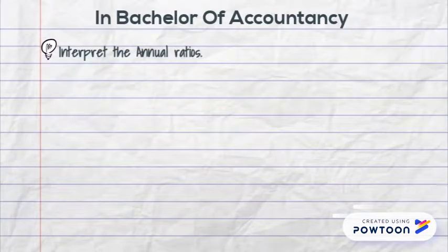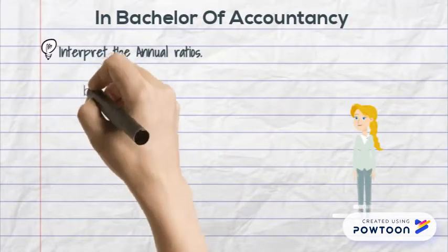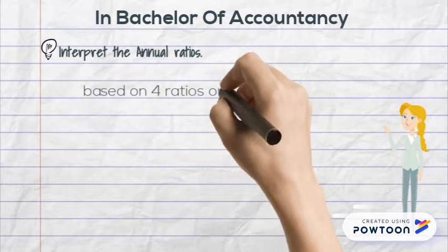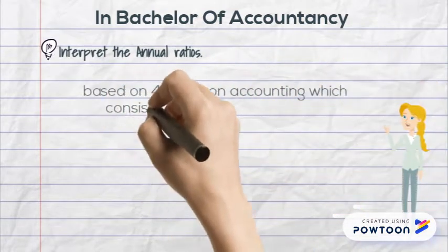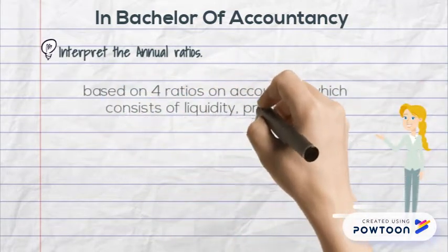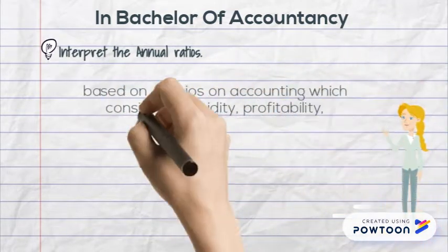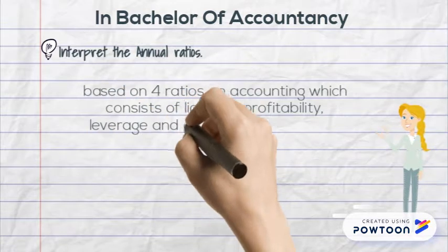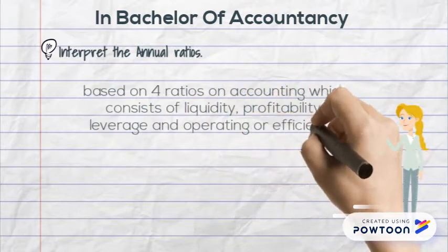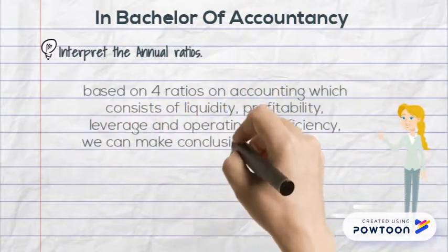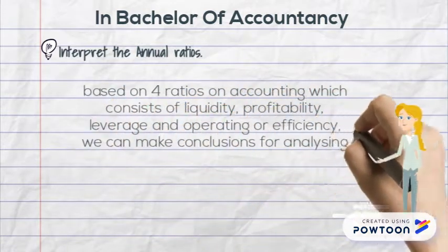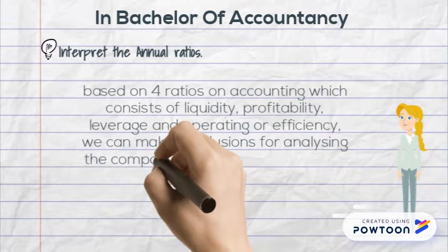Second, interpret the annual ratios. Based on four ratios in accounting, which consist of liquidity, profitability, leverage, and operating or efficiency, we can make conclusions for analyzing the company's financial performance.